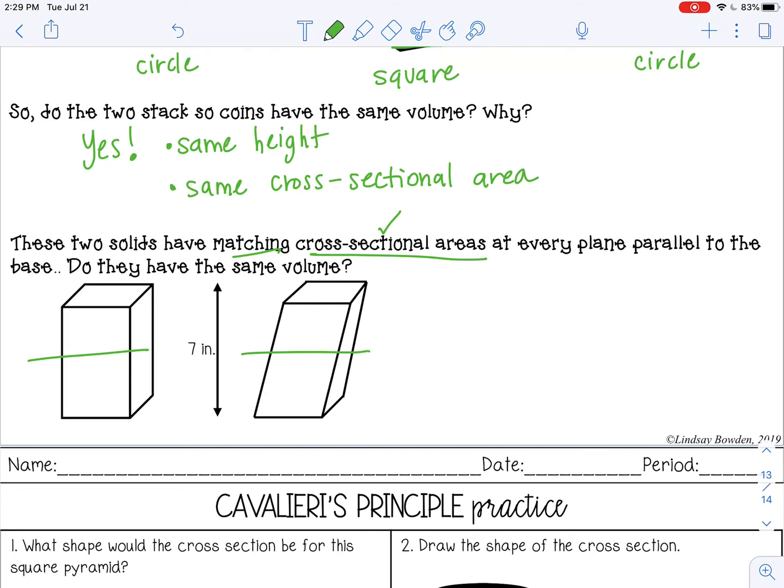Okay, so we have cross-sectional area. Check. Right here it tells us they are both seven inches tall, so they have the same height. So that would be a yes. They have the same volume.